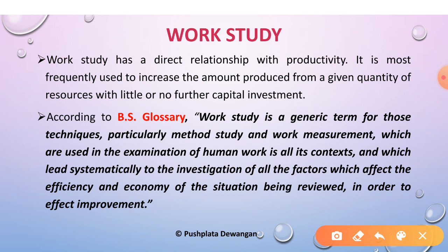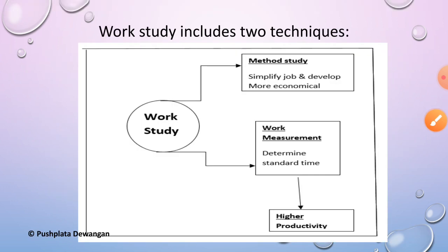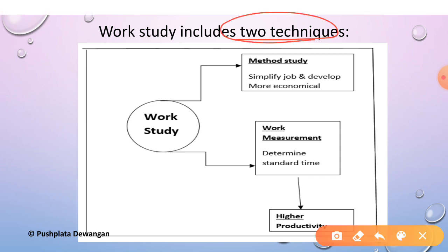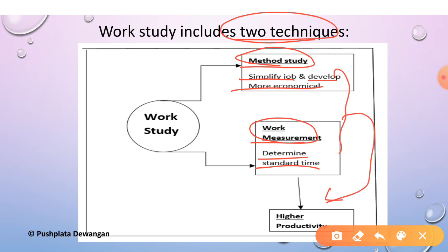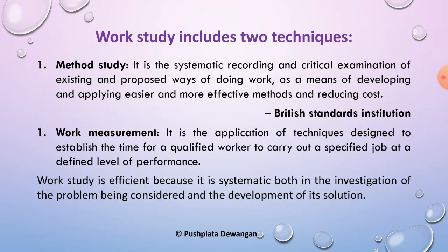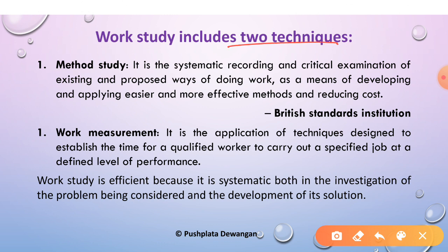Work study includes two techniques. The first is method study, which simplifies the job and develops a more economical method of doing that job. The second is work measurement, which determines the standard time for performing that job. By using these two techniques, higher productivity of the organization can be achieved.